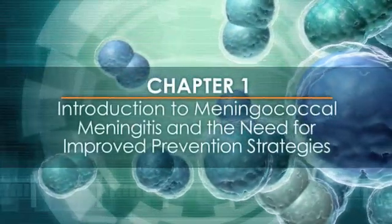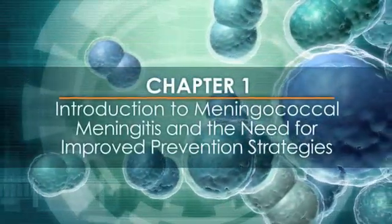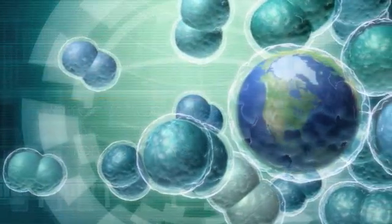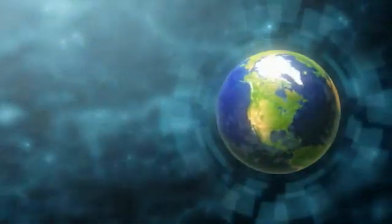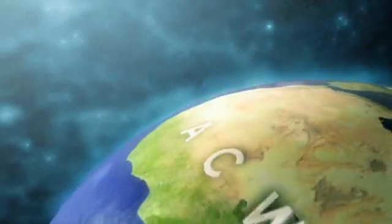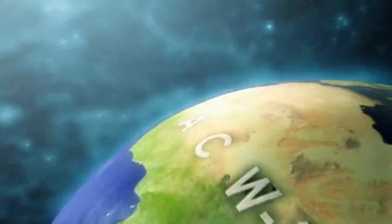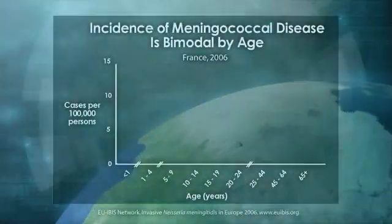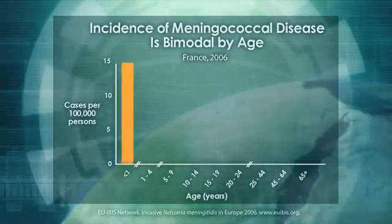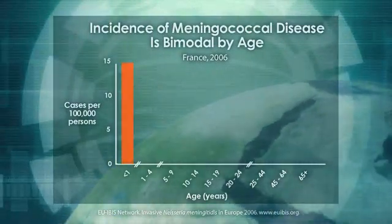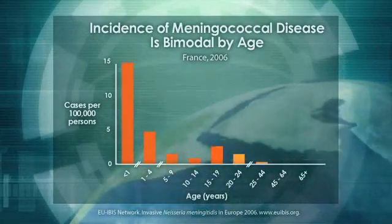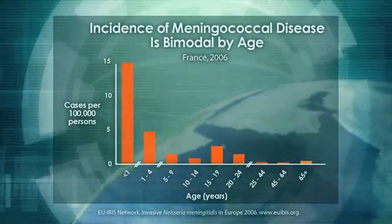The prevention of meningococcal disease remains a global challenge as outbreaks and endemic disease continue to make this infectious disease an important cause of death and disability. The highest rates of meningococcal infection and fatality occur in infants and toddlers. Rates then drop but increase again during adolescence and early adulthood.